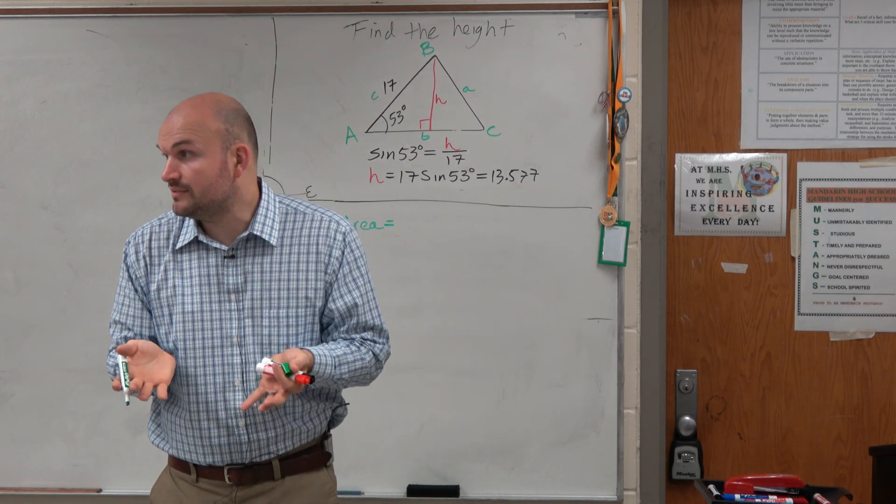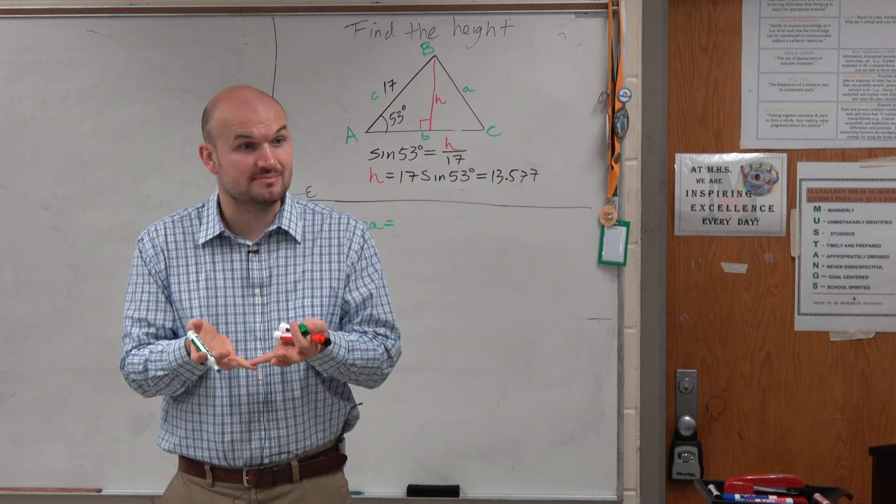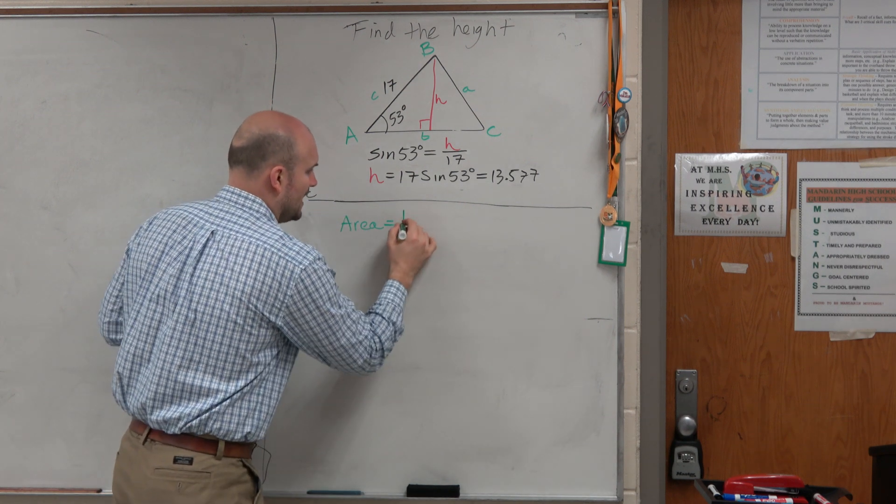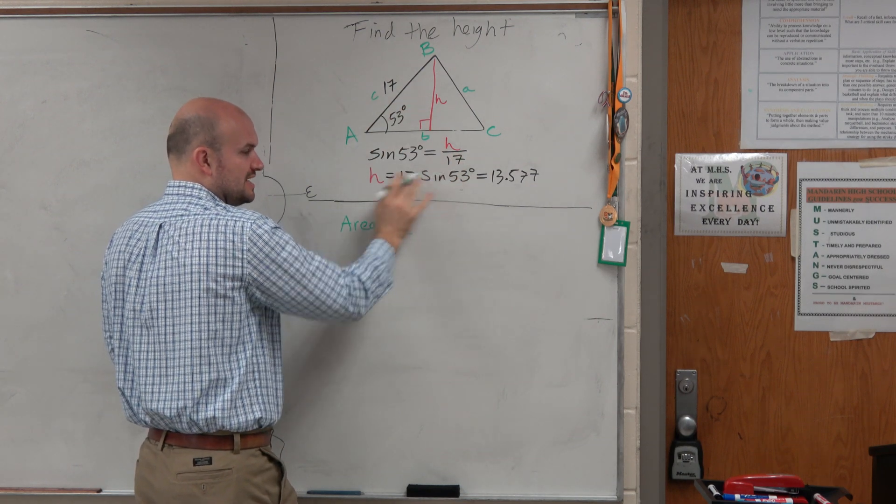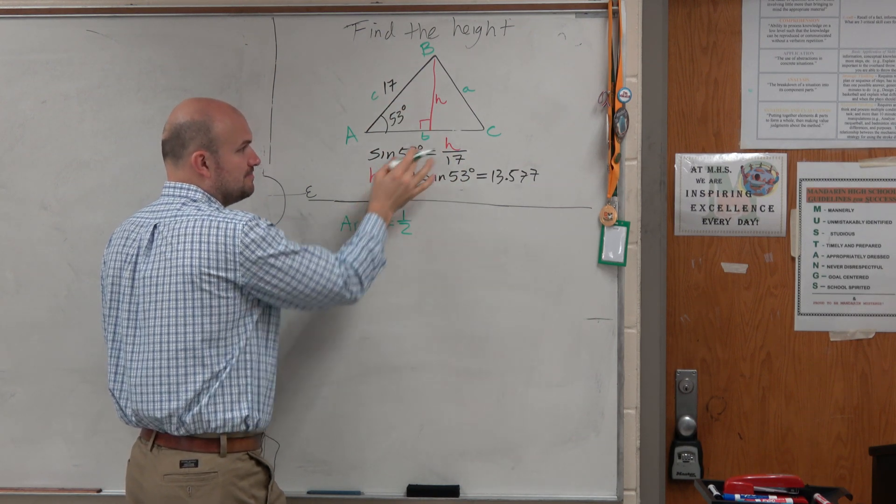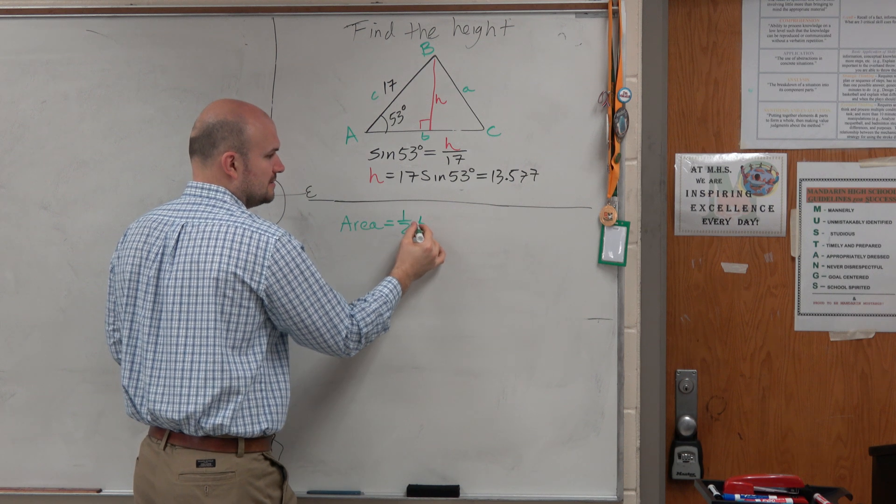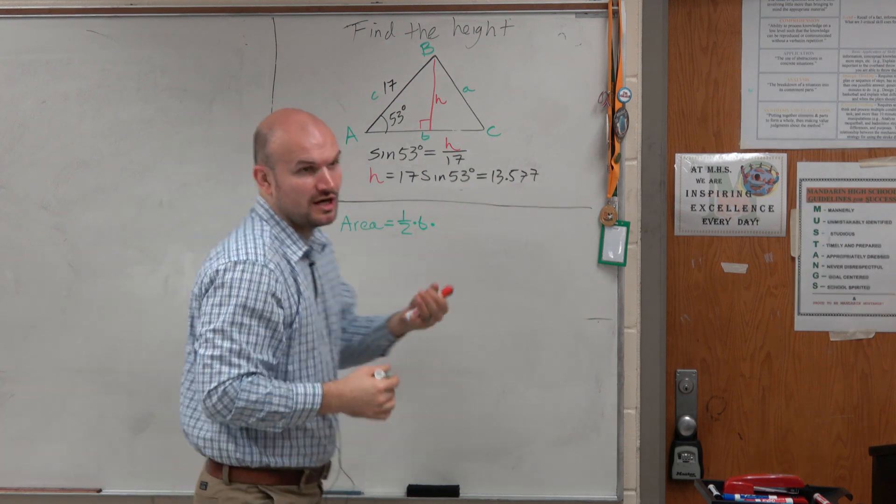Well, now we know the height. We remember the area of a triangle is one-half base times height, right? So I could say one-half. Using green here, I'm not going to use the numbers because the numbers was just to understand this. Using the b represents my base. And now I need to figure out the height.